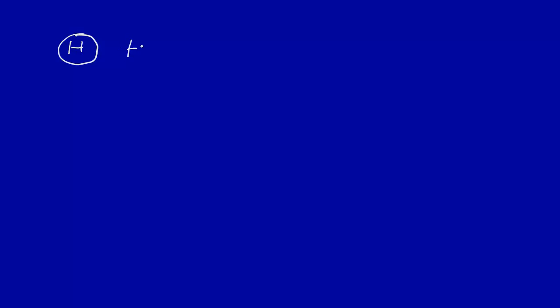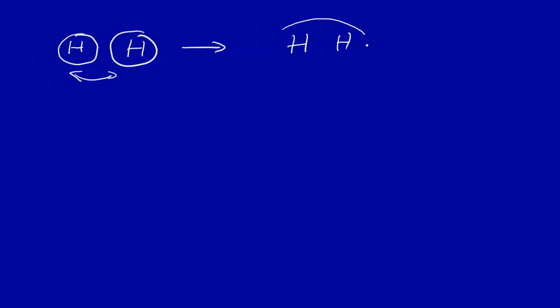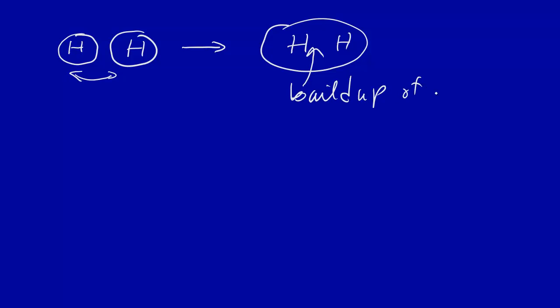Let's take a look at that. Let's say we have a hydrogen atom here, and we'll denote the electron distribution by a circle — the 1s, for example — and here we have another hydrogen atom. As these hydrogen atoms come closer together, what happens? You form a bond where here's the nucleus and here's the nucleus, and then you have some sort of bond like this, and this would then be the buildup of electron density.